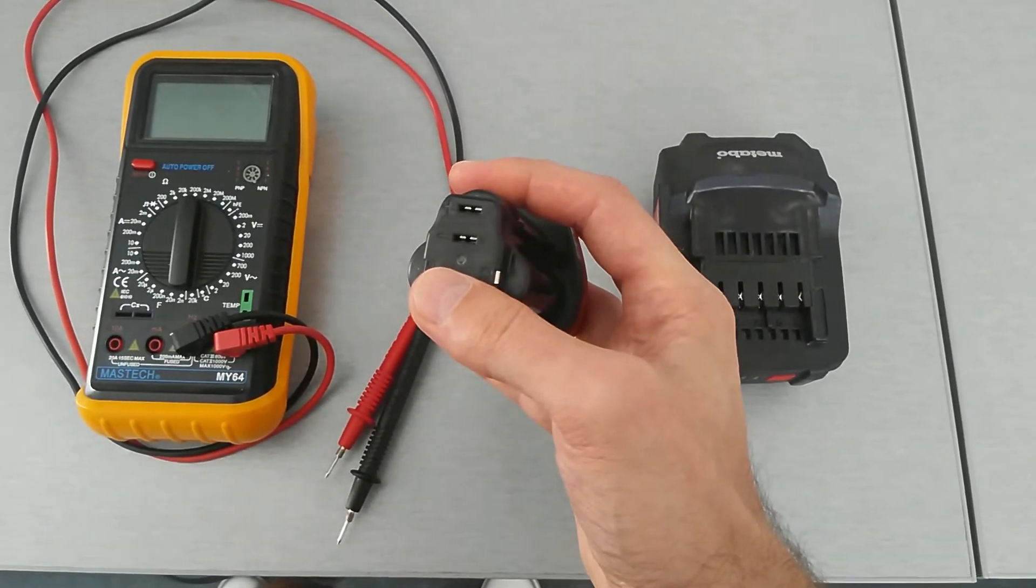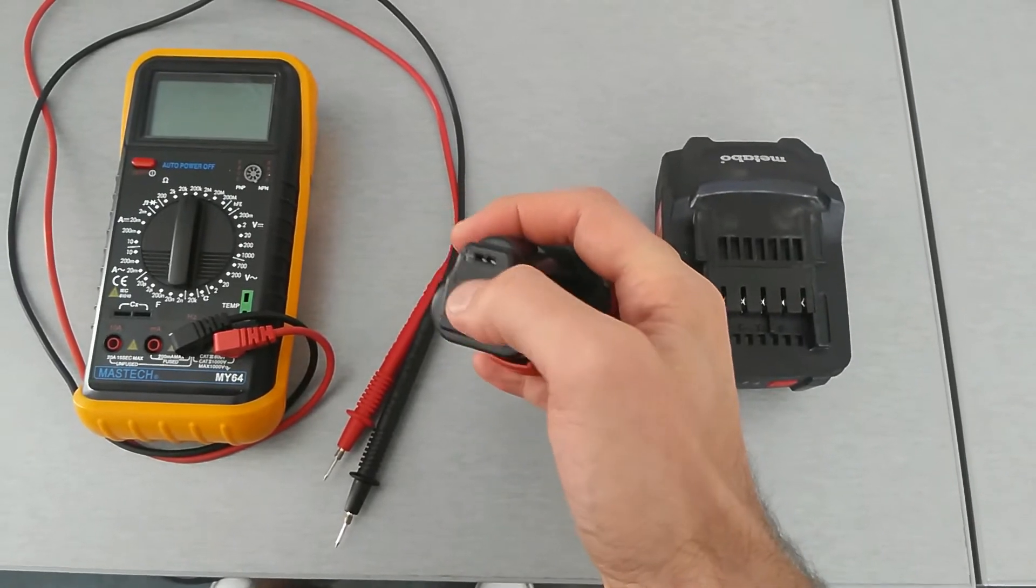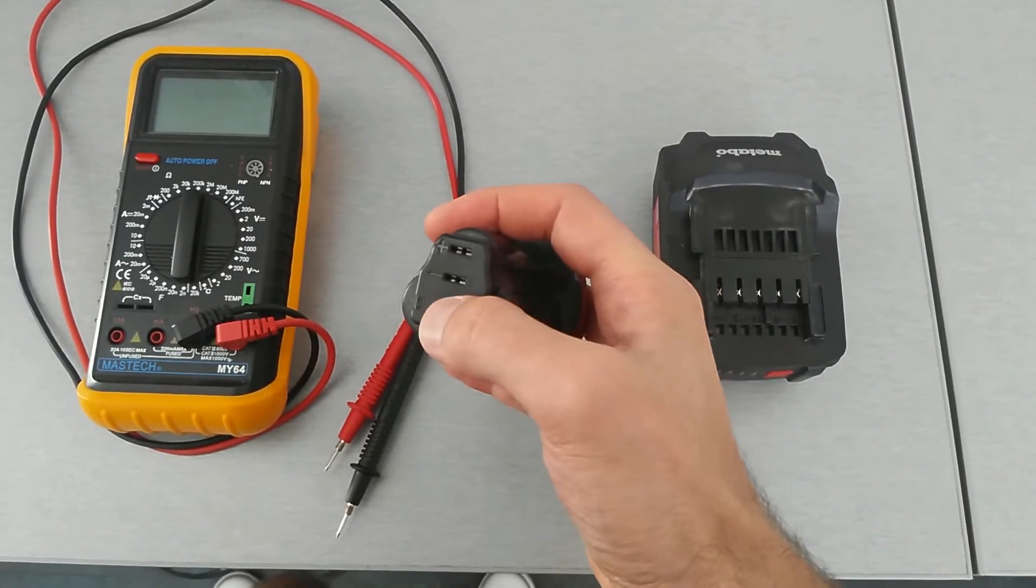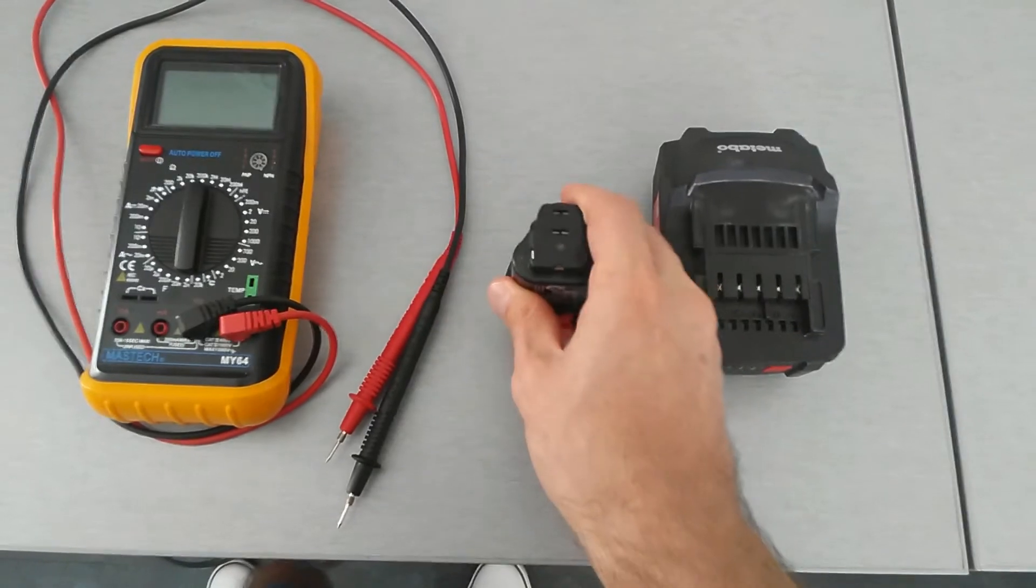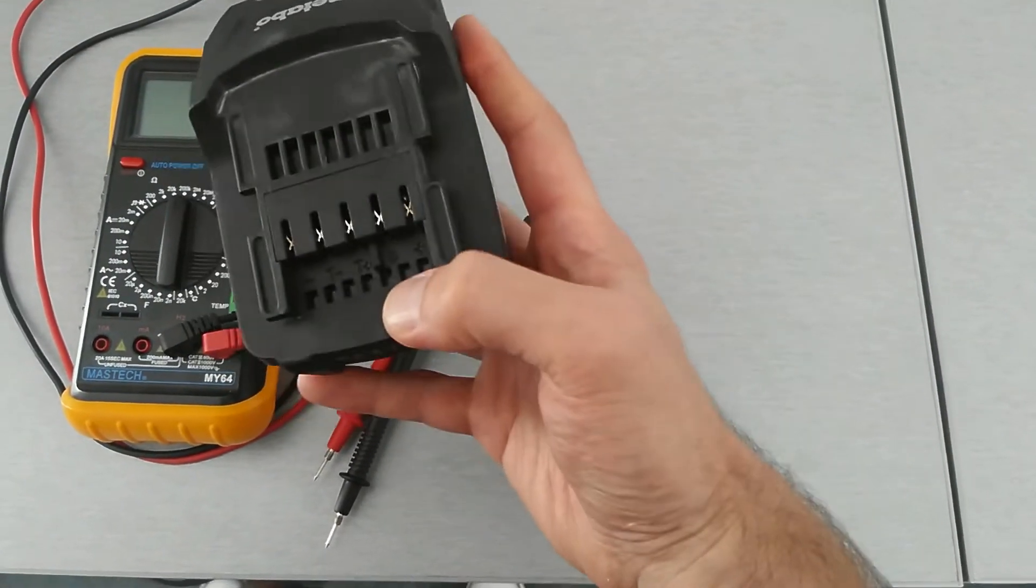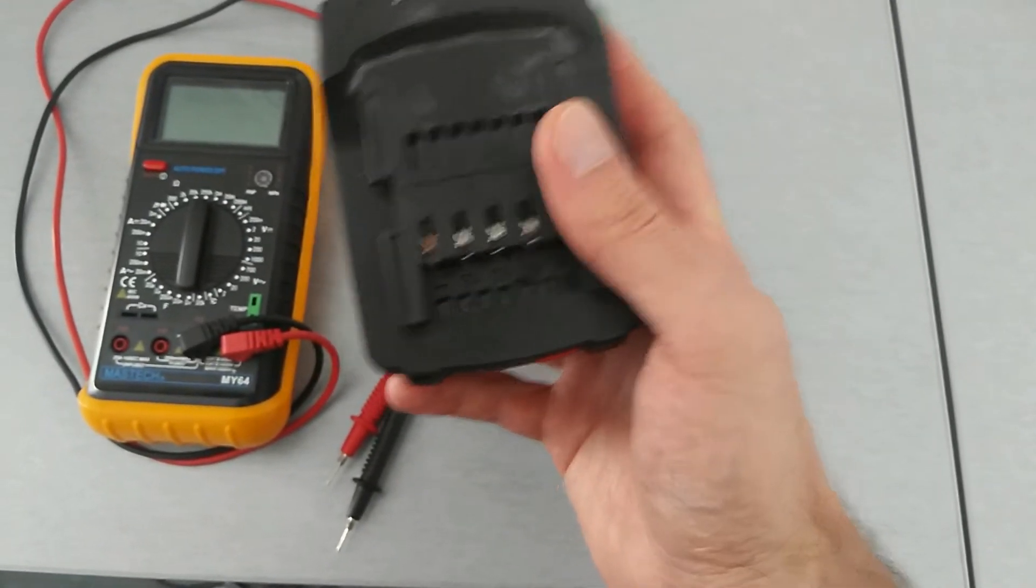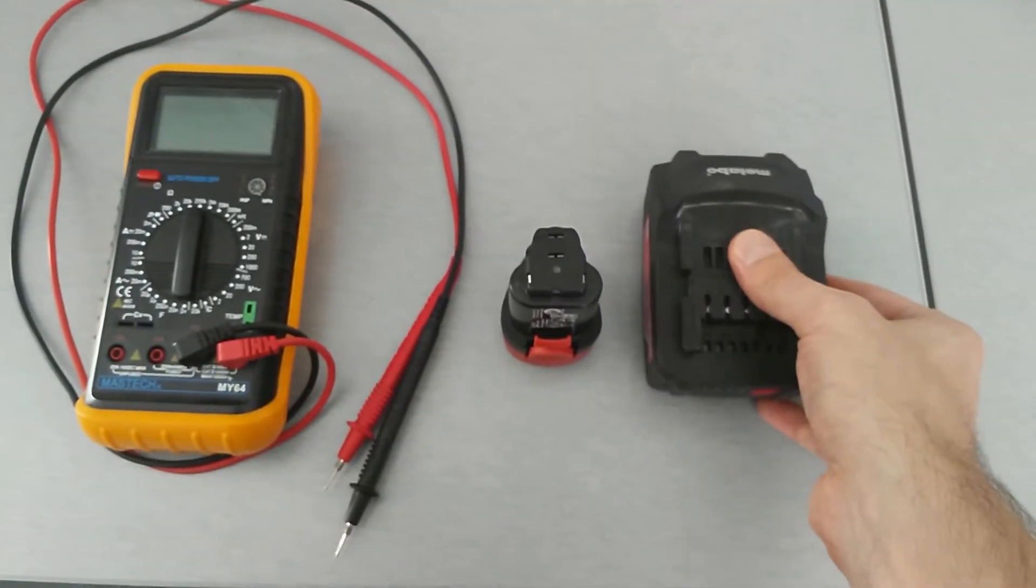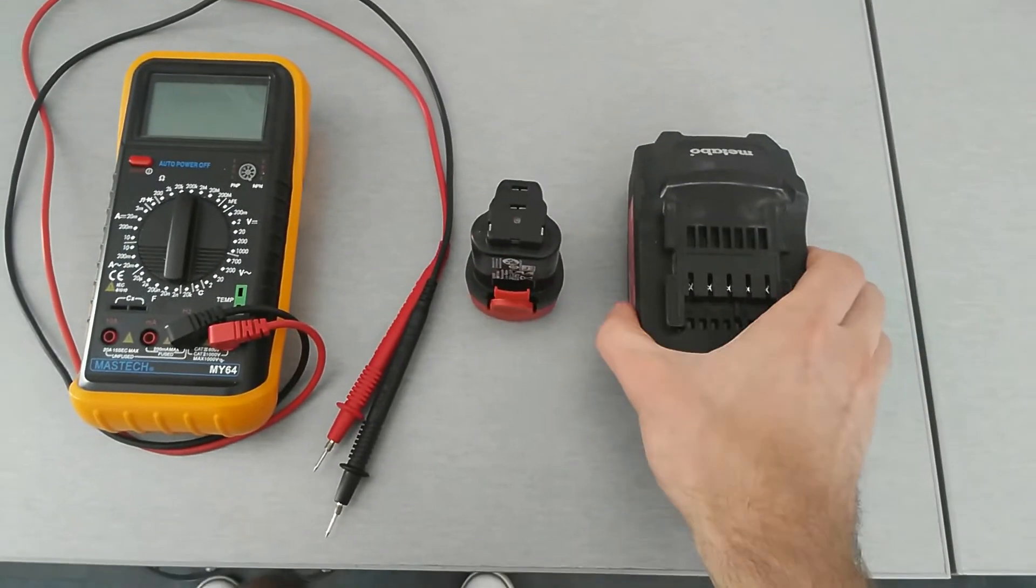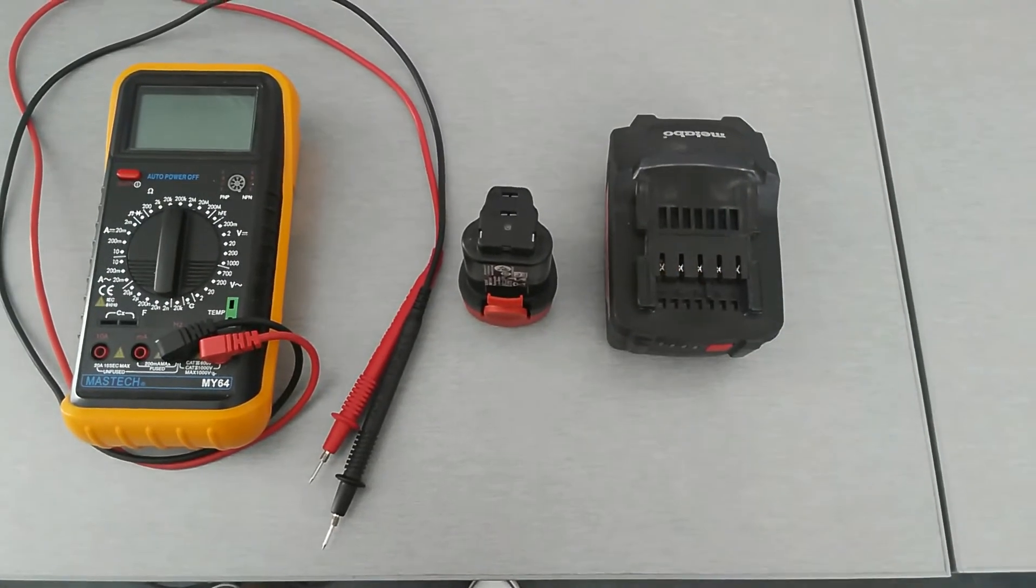To measure the voltage, you only need the terminals marked with plus and with minus. Again, plus and minus. The remaining three terminals are used for diagnostics and communication between the charger and the battery.